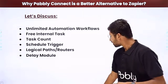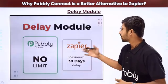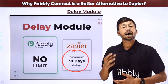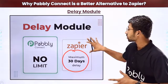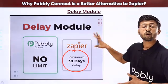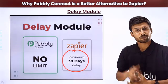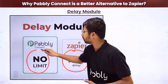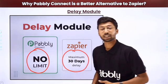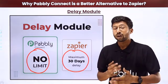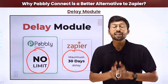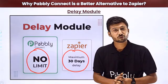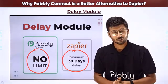The delay module in Zapier comes with a maximum delay time of 30 days. In Pabbly Connect, there is no such limit — you can add an unlimited amount of delay time in your automation workflows.